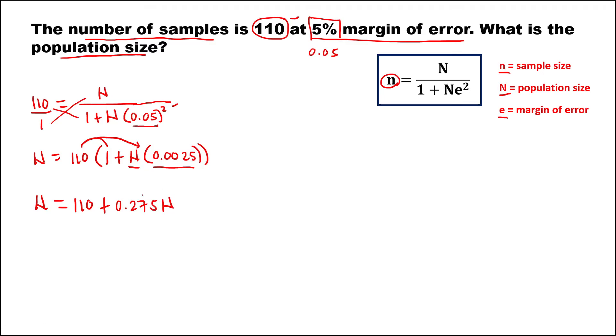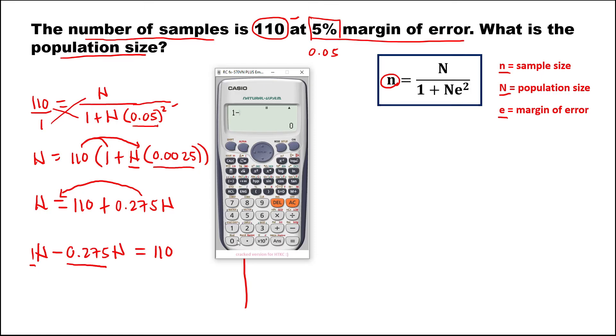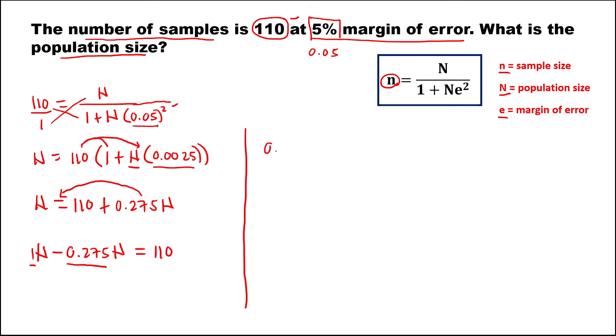To solve for N, we need to transpose this 0.275N to the other side. So we have N minus 0.275N equals 110. We have 1 minus 0.275, so this is 0.725 times N, then equals 110.